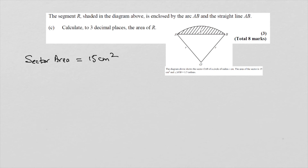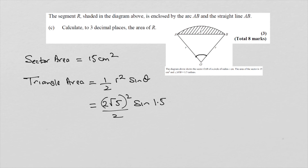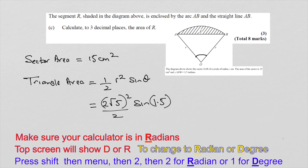We just need to find the area of the triangle. The angle is 1.5 radians and we know the radius. The area of the triangle equals one half R squared sin theta, because both sides of the triangle are the radius. So that would be (2 root 5) squared over 2 times sin 1.5 radians. You need to have your calculator set to radians mode.